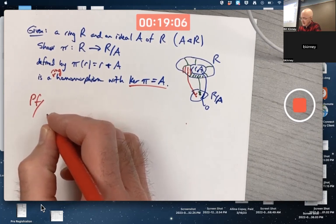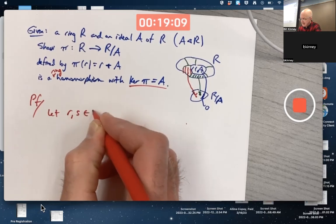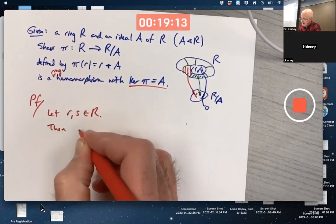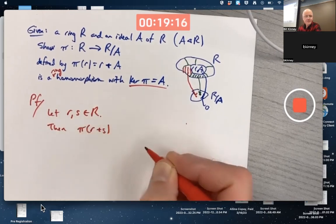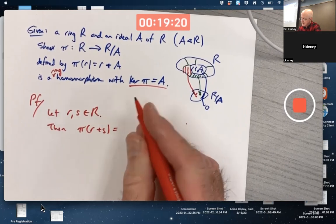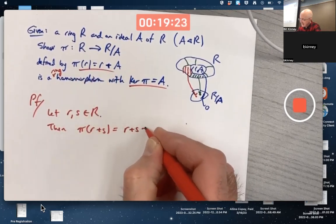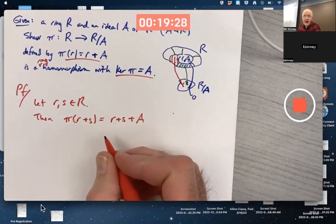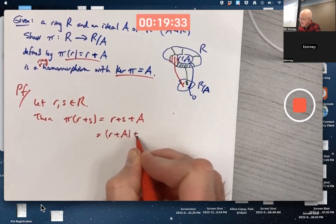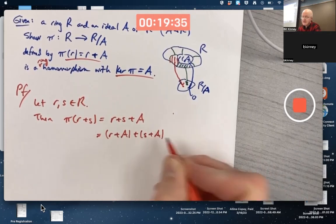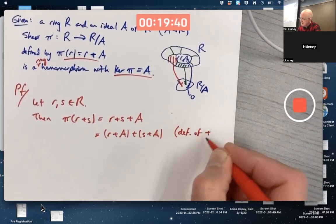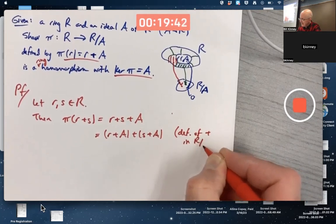As far as being well-defined, you could say, let R comma S be in capital R to show it's well-defined or in addition, pi of R plus S by this formula up here is the coset R plus S plus A. But by the definition of coset addition, that's the same as R plus A plus S plus A. That's the definition of coset addition in the factor ring.